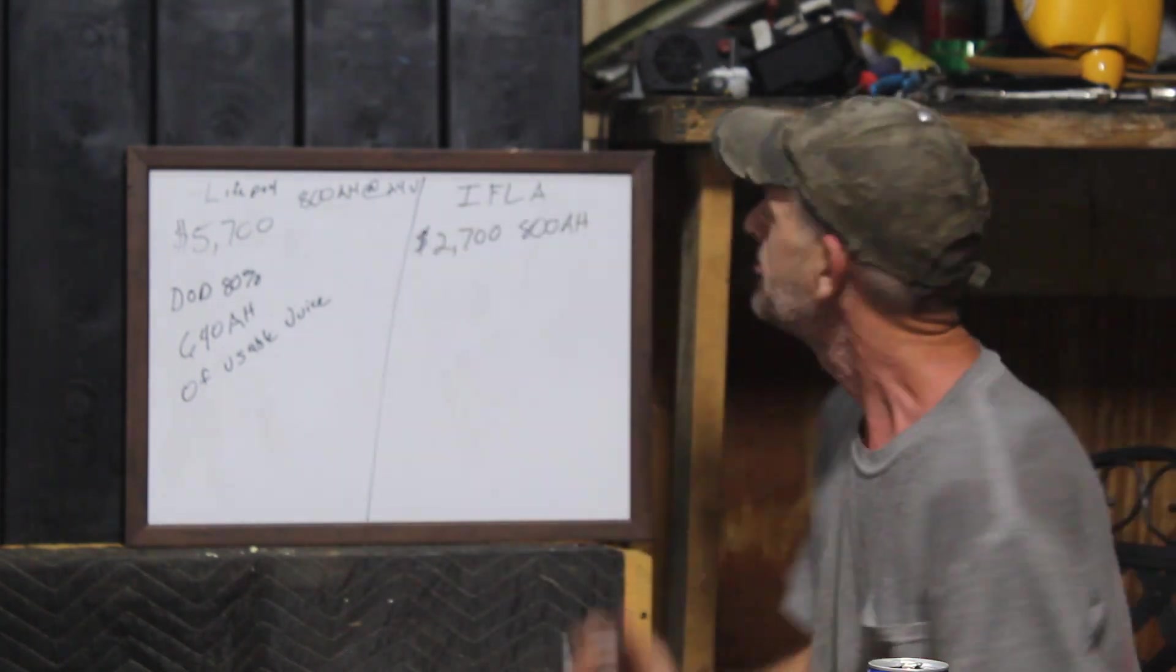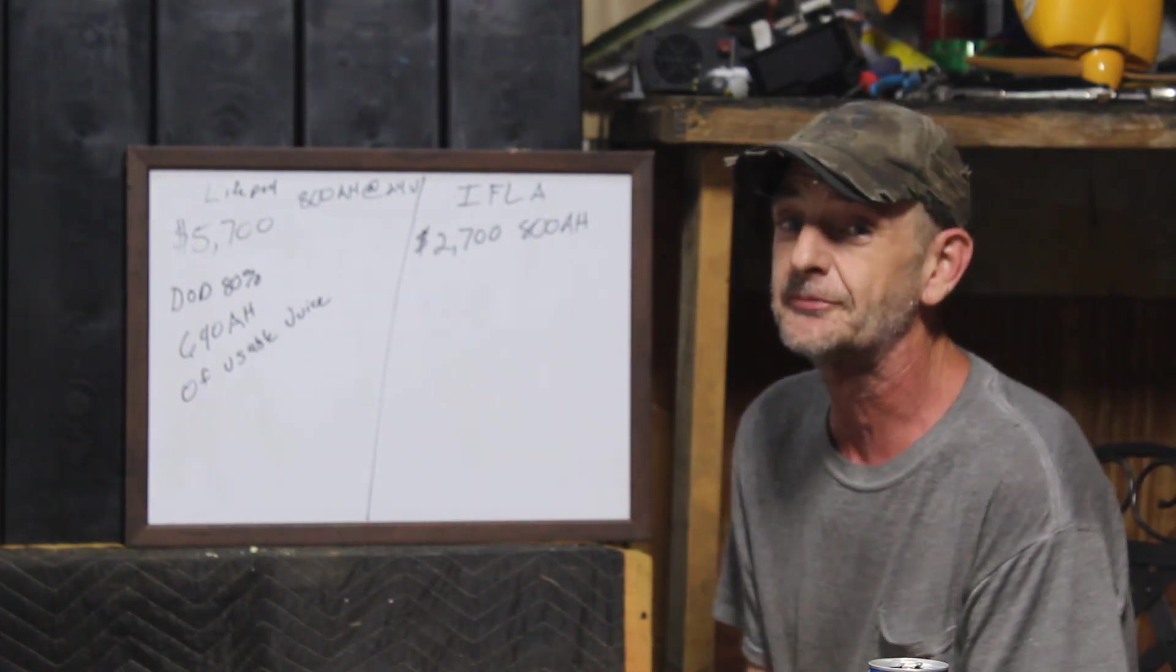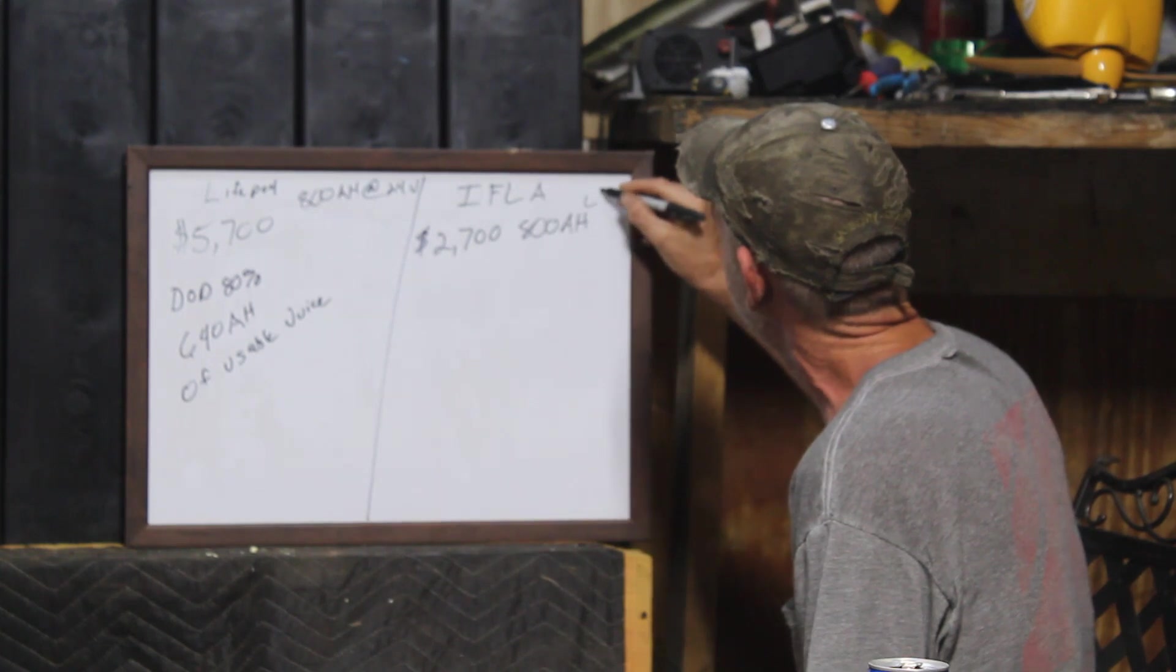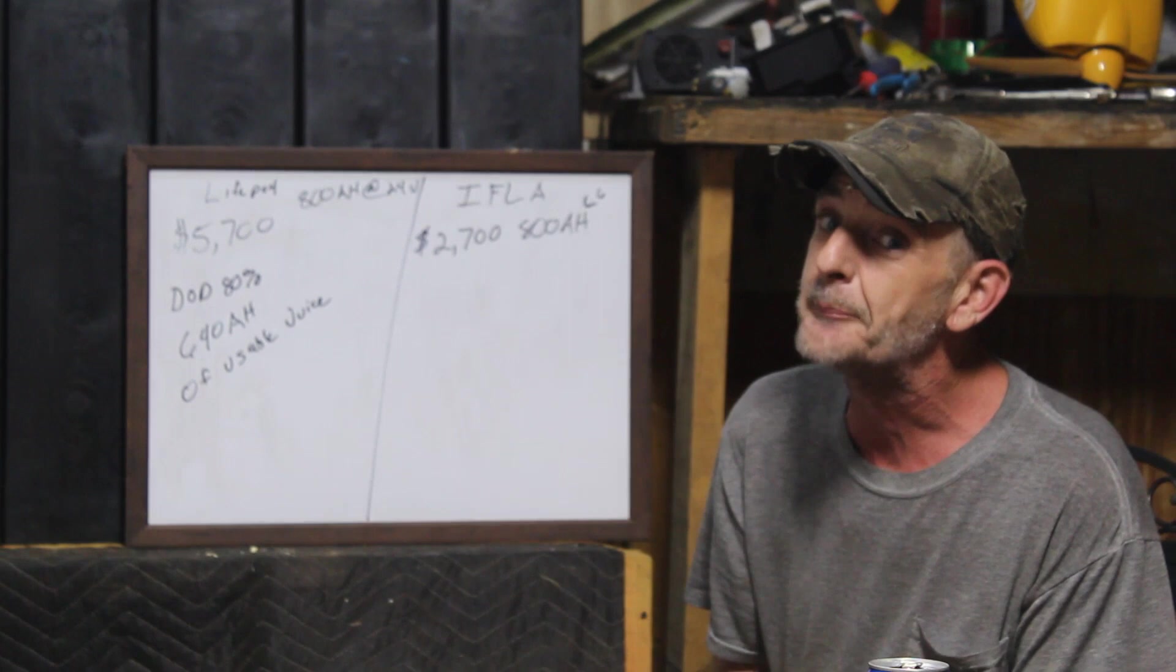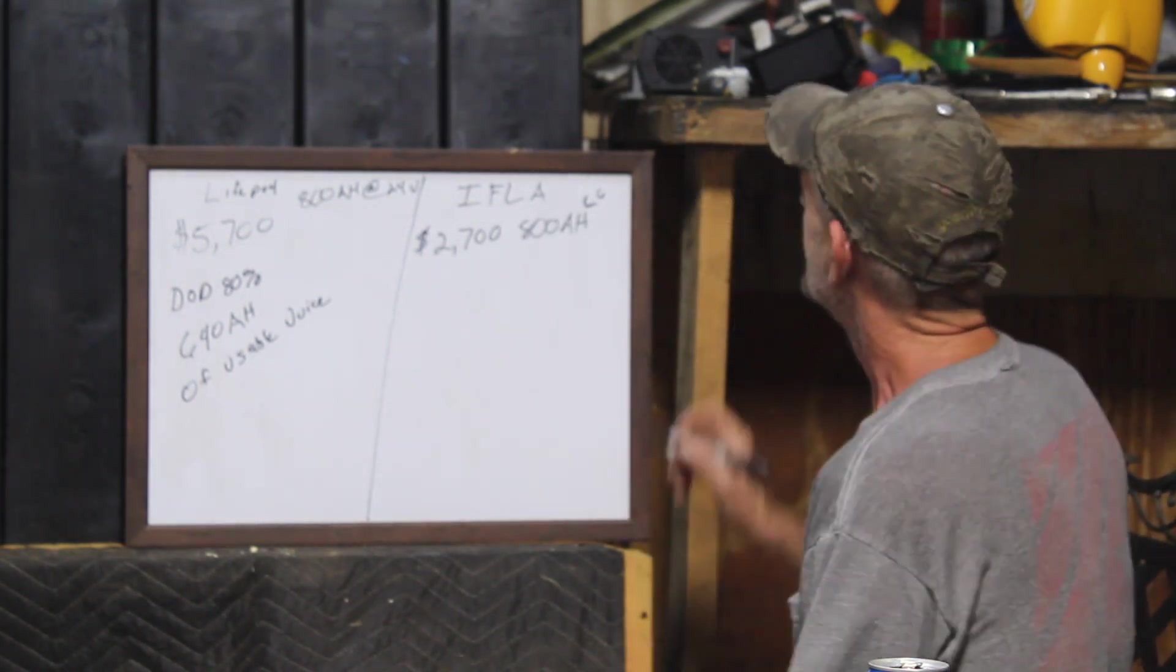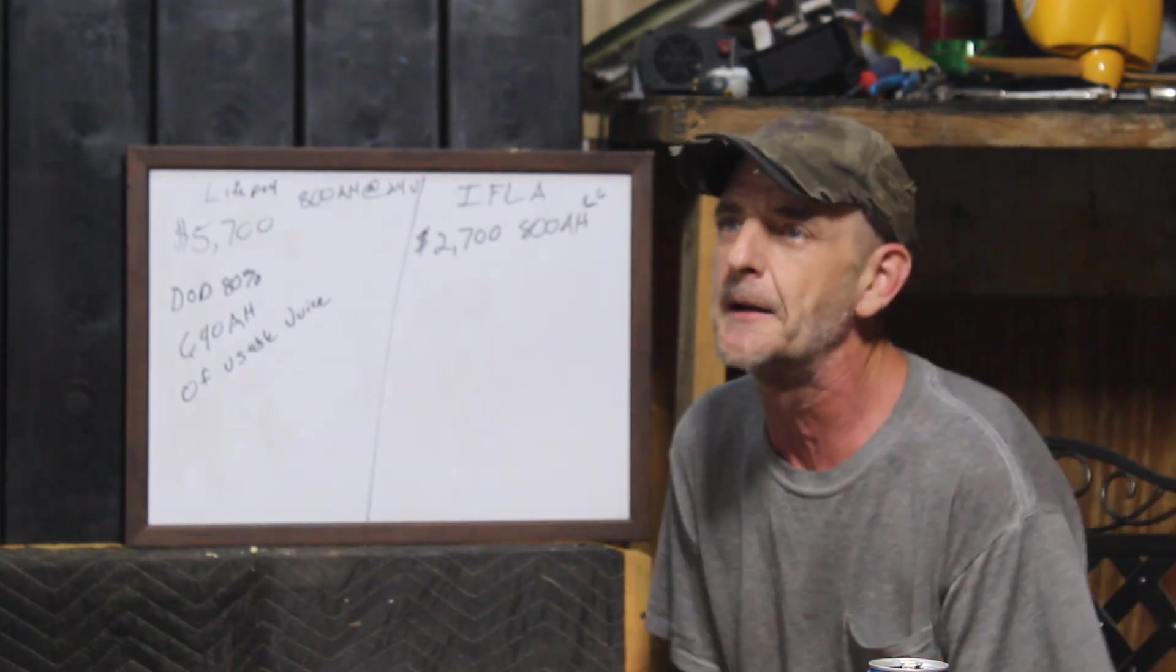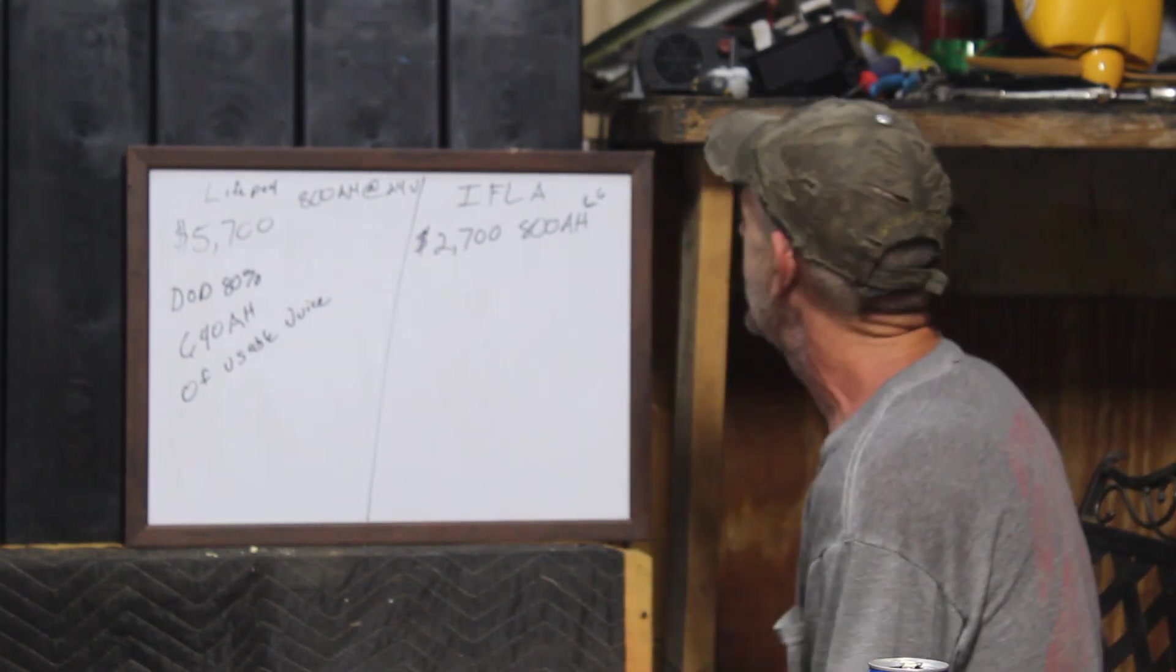The first thing we have to do there is convert this number because this is a C6 rate, that's a C20 rate, and we want to go apples to apples. So how do we do that? We have to take our amp hours and multiply it by 1.576. So 800 amp hours times 1.576 is going to be 1,260 amp hours.